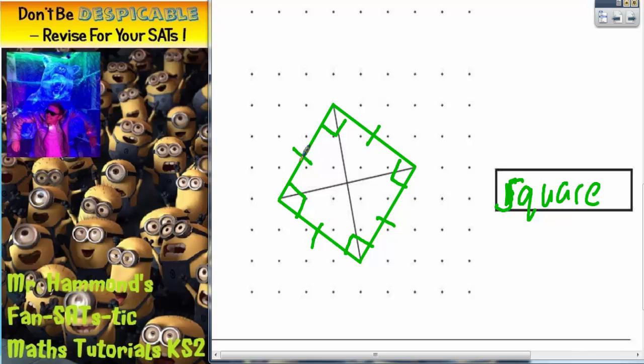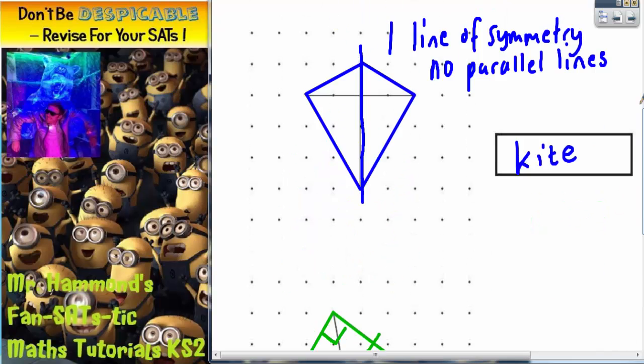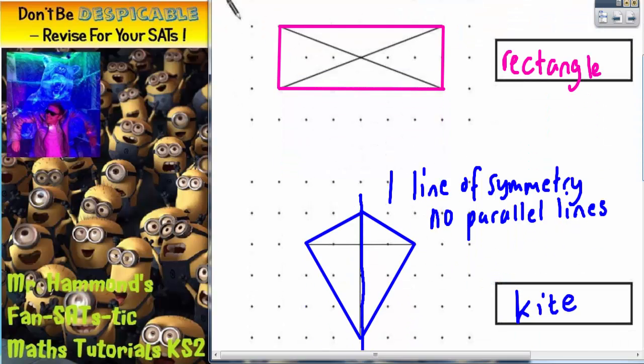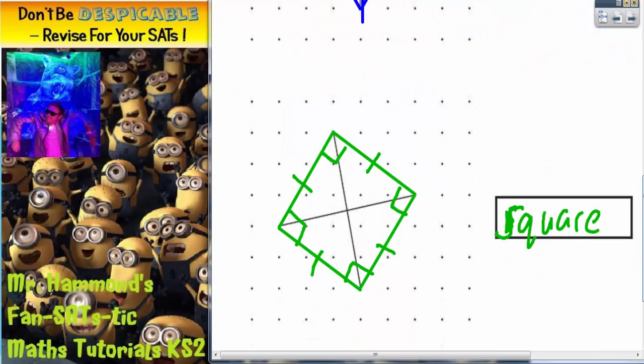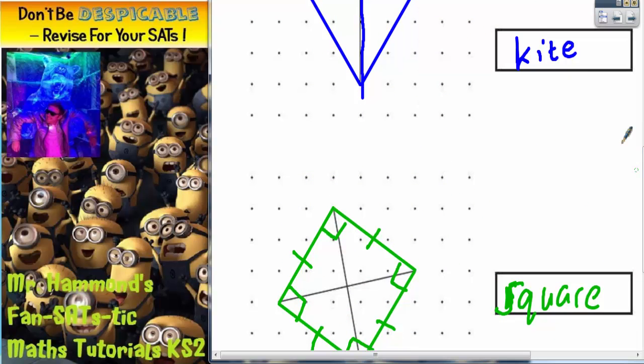So a square has four equal sides and four right angles. So there you have it. The first shape is a rectangle, the second shape is a kite, and the final shape is a square.